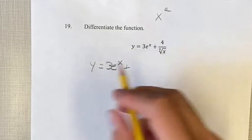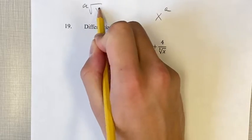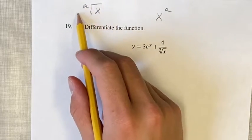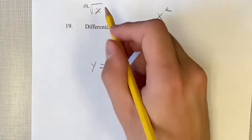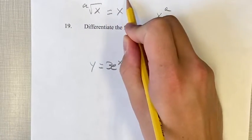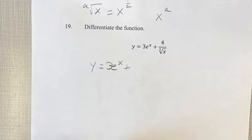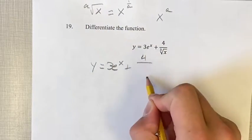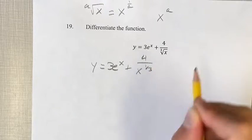The first thing you can notice is that for the ath root of x, think the square root, the cube root, the fourth root, whatever, this is just equal to x^(1/a). So a here is 3, so this is just x^(1/3). So 4 over x^(1/3).